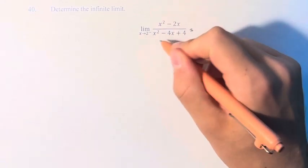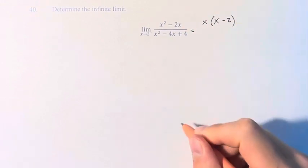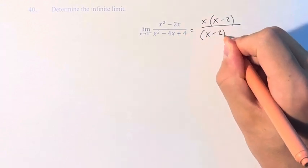So the first thing to do is factor the top and bottom. On top we have x times x minus 2, and on the bottom we can factor this out to x minus 2 times x minus 2.